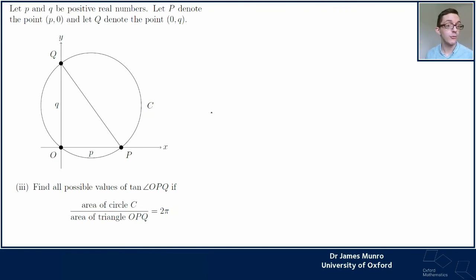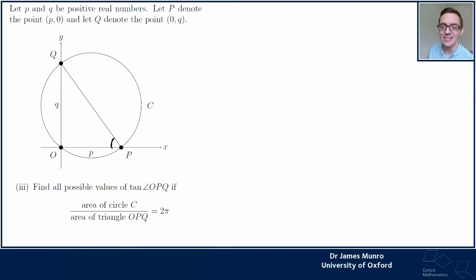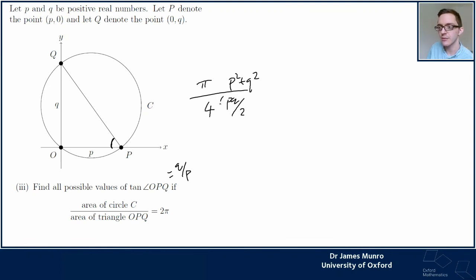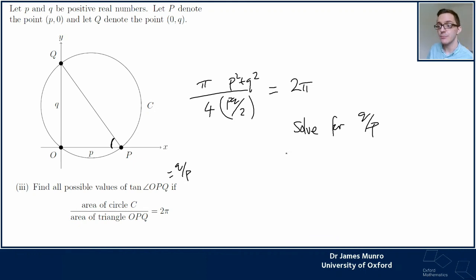Find all possible values of tan(OPQ) - that's this angle - given that the area fraction equals 2π. We need tan(OPQ) = q/p, and the relationship from before gives p² + q² = some value. Setting the fraction equal to 2π and working with it: p² + q² over pq = 4, which rearranges to p/q + q/p = 4. Setting u = q/p, this becomes u + 1/u = 4.